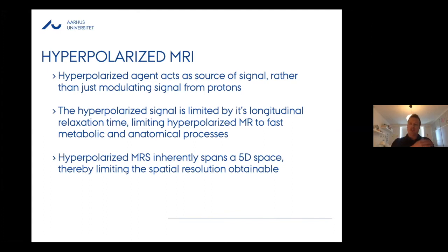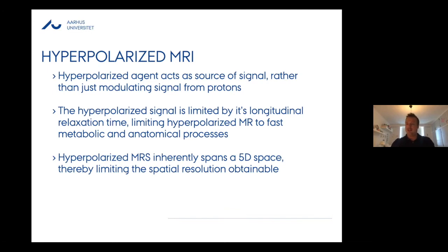Hyperpolarized MR is a radically different technique from conventional MRI, where normal contrast relies on contrast agents — such as gadolinium or iron oxides — that change the surrounding tissue water. In clinical MRI we're normally only looking at water or fat. But in hyperpolarized MR, we're actually seeing the tracer itself. We are limited by the longitudinal relaxation: the T1 relaxation time is a limiting factor, and we have roughly 60 to 70 second T1s, limiting us to fast anatomical processes like first-order perfusion or very fast metabolic processes.